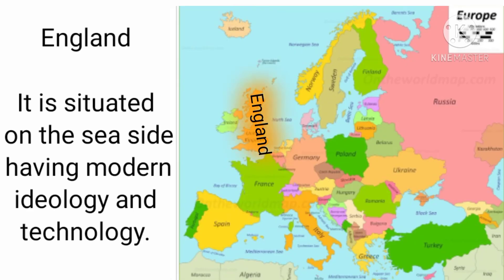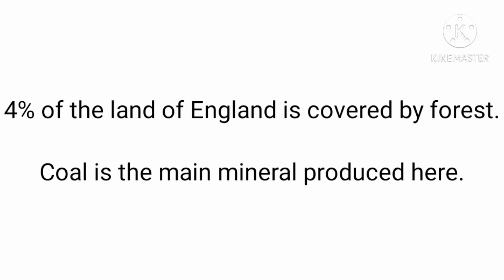England is situated on the seaside, having modern ideology and technology. It is shown by the orange blinking area in the map of Europe. Only 4% of the land of England is covered by forest, and coal is the main mineral produced here.